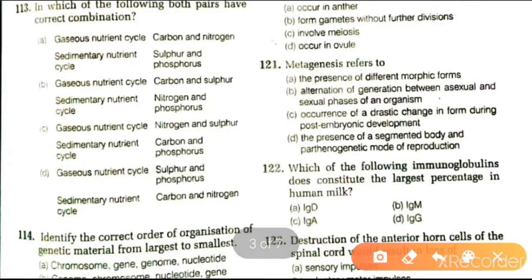Next question: metagenesis refers to the presence of different morphic forms; alternation of generation between asexual and sexual phase of an organism; occurrence of drastic change in form during post-embryonic development; or presence of a segmented body. The answer is alternation of generation between asexual and sexual mode of an individual.